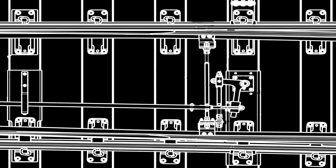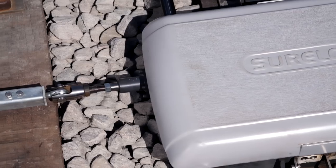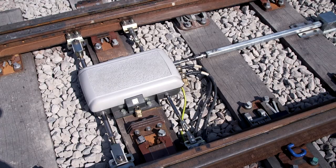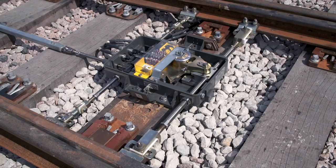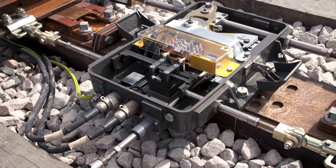In traditional points drives, adjusting and setting rods and cranks for differences in travel can be complicated and time consuming. In contrast, the Shorelock system only requires independent adjustment of each back drive. The linear back drive also replaces traditional stretcher bars with a dual drive and provides detection on both rails.